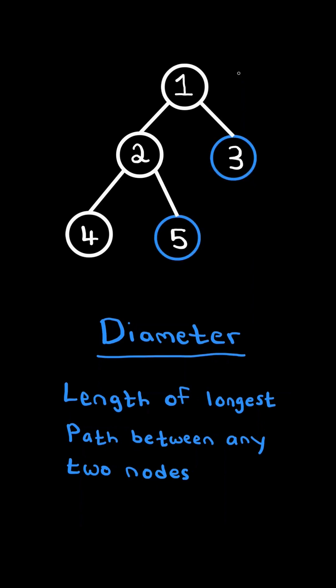For example, consider the length of the path between nodes 5 and 3. There are three edges along this path. Similarly, there are three edges between the nodes 4 and 3, and therefore the diameter of the tree is the length of the longest path between any two nodes, which is 3.